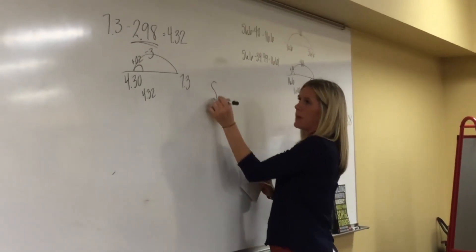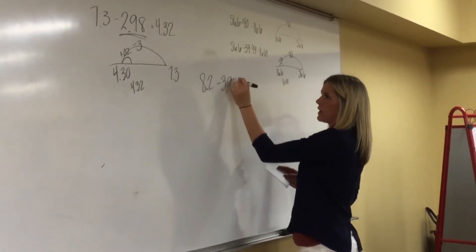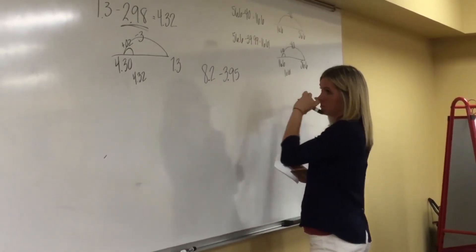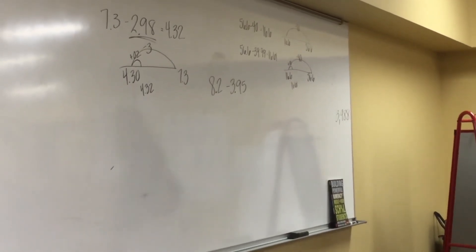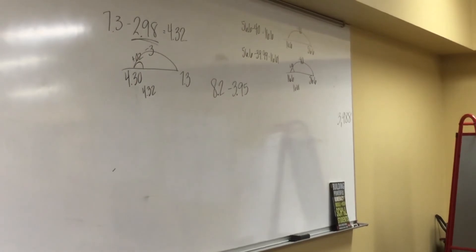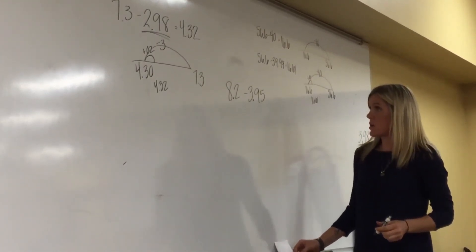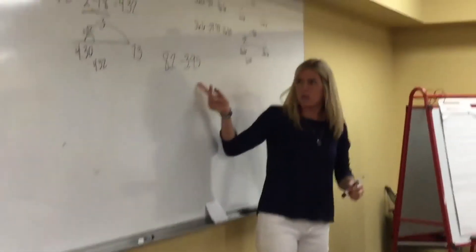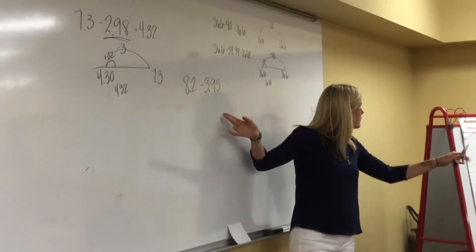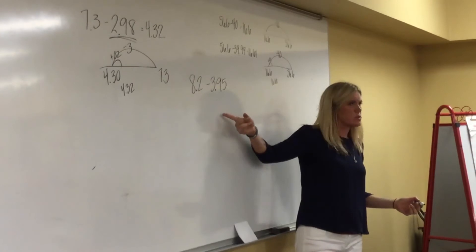Last one. What if I gave you 8 and two tenths — or $8.20 — and I ask you to subtract $3.95? I wonder if there's something close to that which feels easier to subtract. Renita, this is kind of a tricky problem. How did you tackle it? What did you get? $4.25. Anyone else get $4.25?